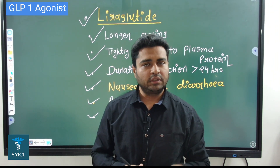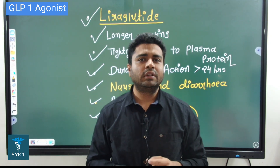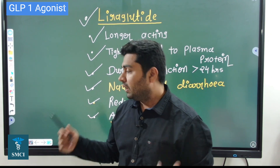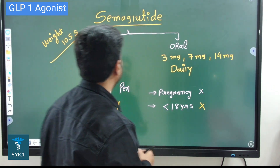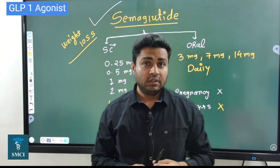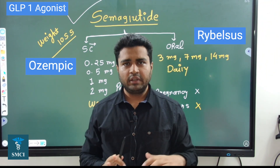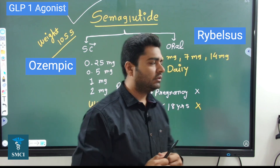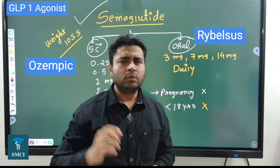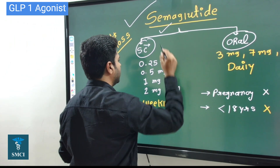Liraglutide is available subcutaneously. So exenatide was the first developed — short-acting, controlling postprandial hyperglycemia well — then we developed the longer-acting molecule liraglutide, also given subcutaneously. To solve the oral administration problem, we have another molecule: semaglutide. Semaglutide can be given subcutaneously as well as orally. One company is forming this drug in both oral and subcutaneous formulations. I have also written the doses of these medications because nowadays semaglutide is marketed much more than exenatide and liraglutide.